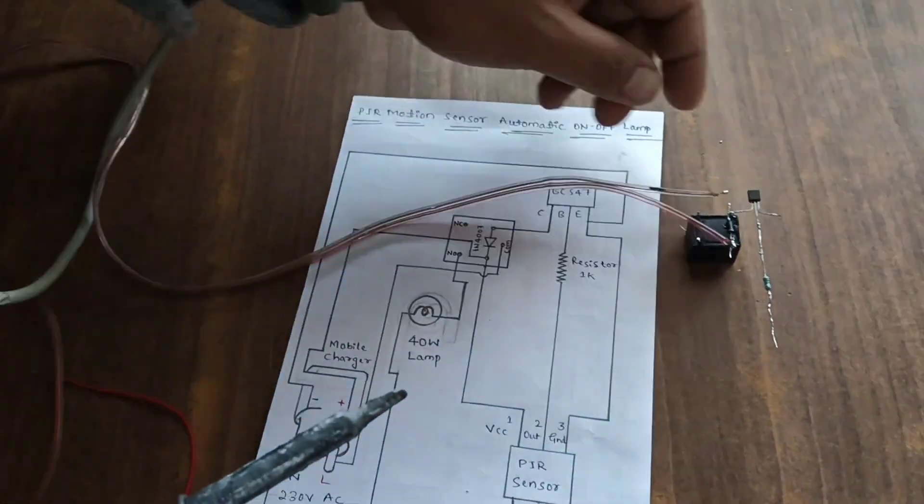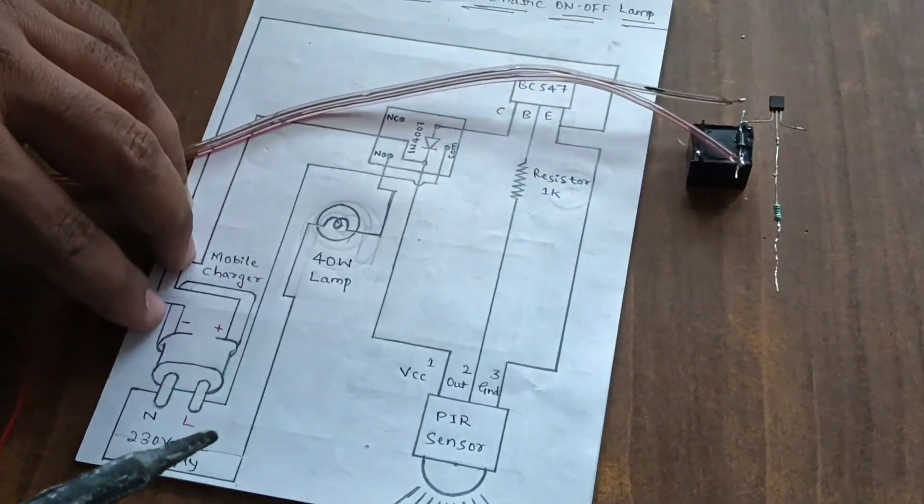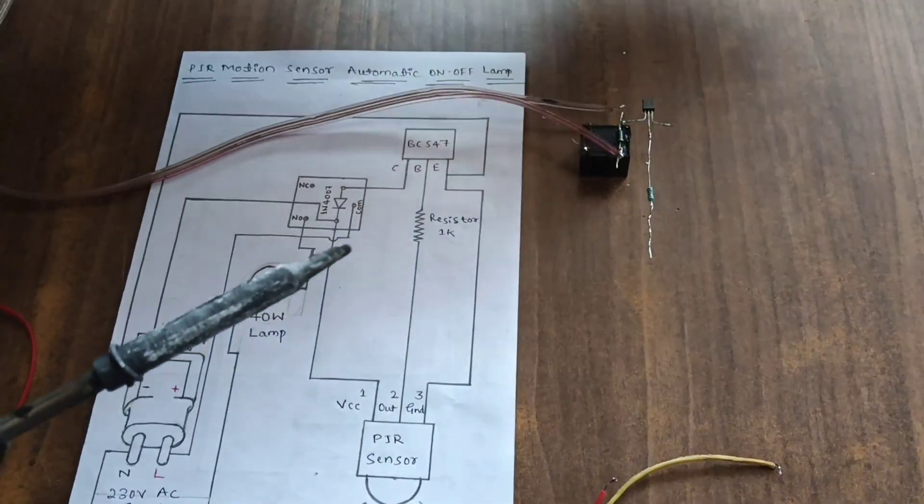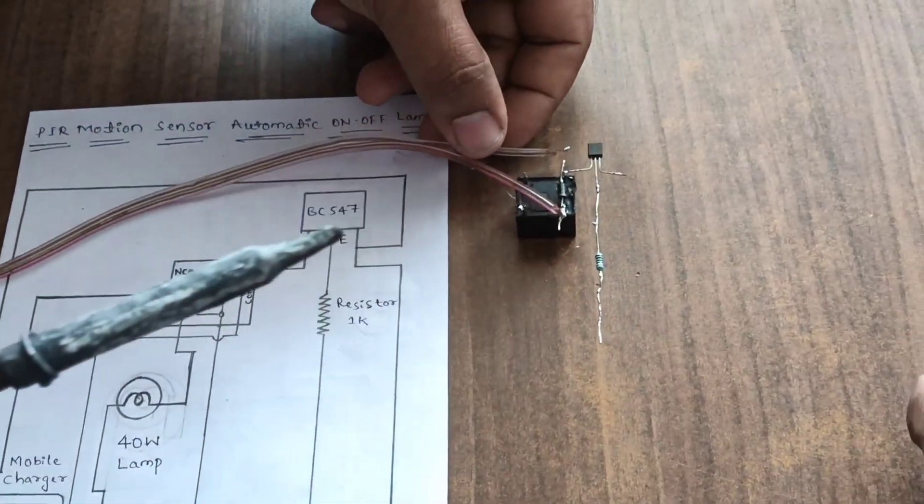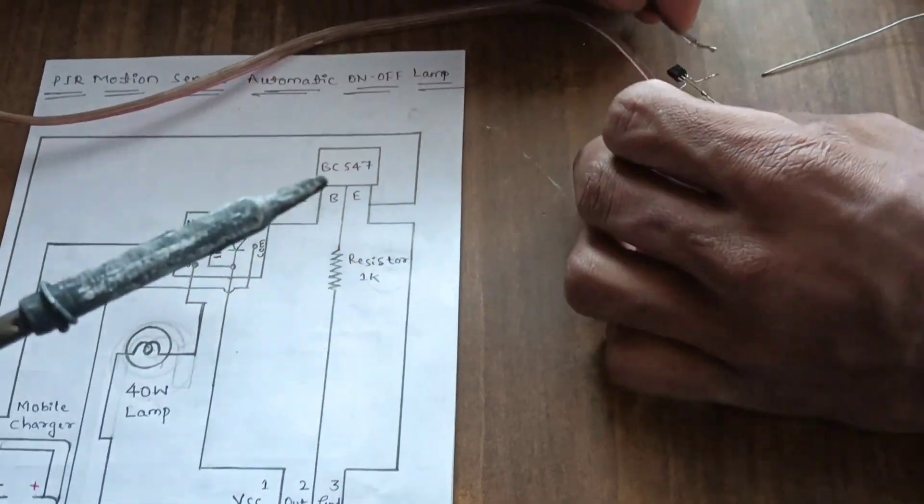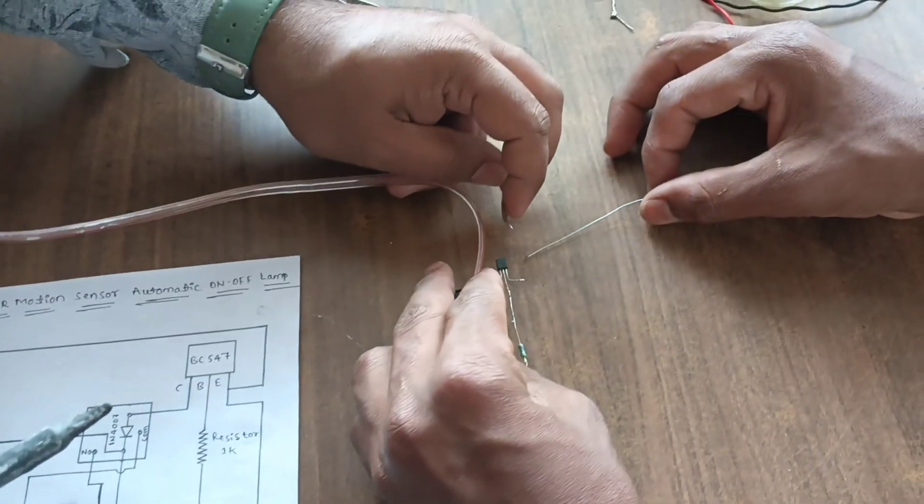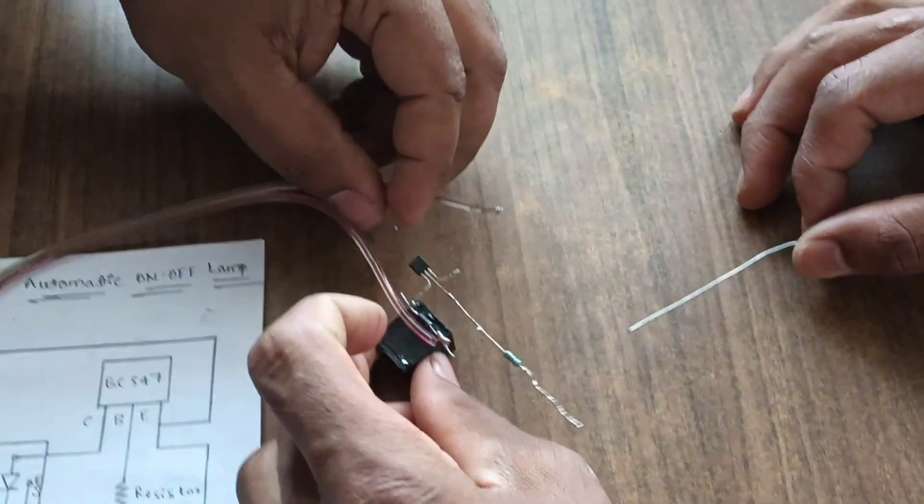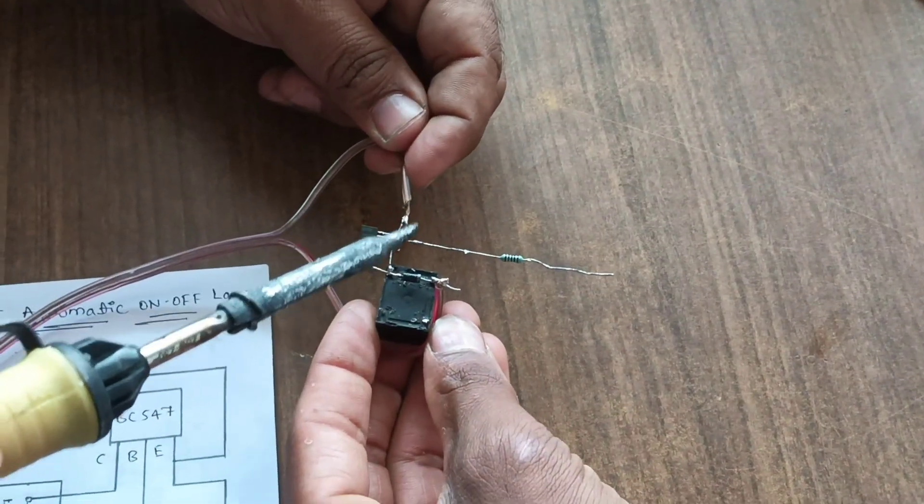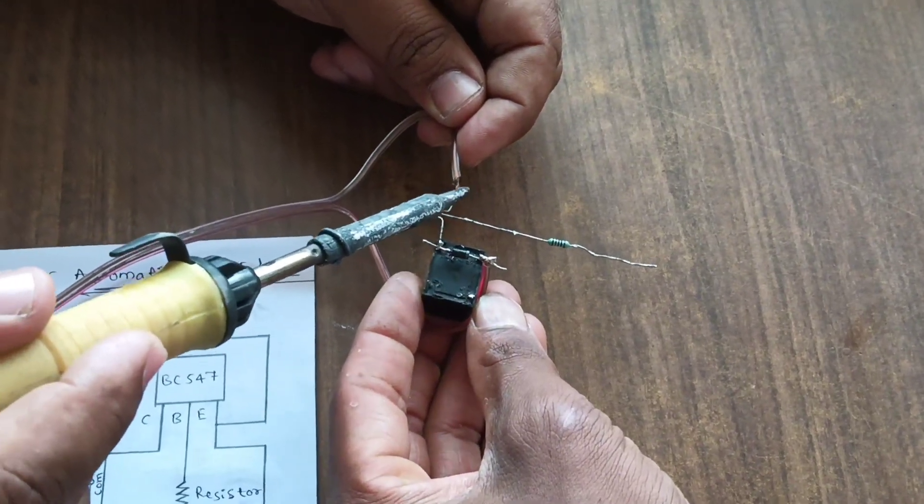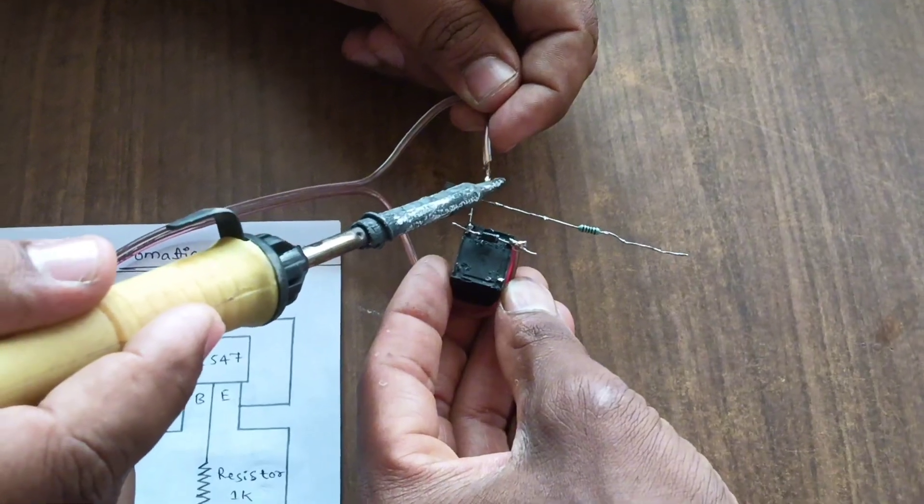Next, negative of the charger is connected to BC547 emitter. This is the emitter of the BC547. We connect 5-volt charger negative.